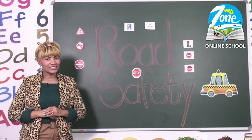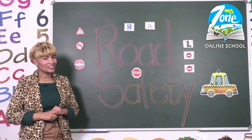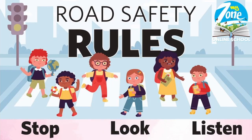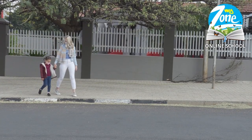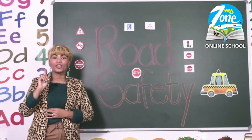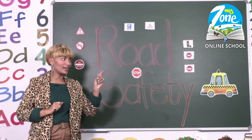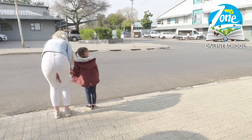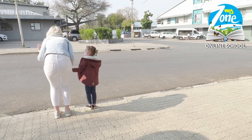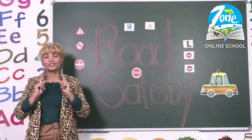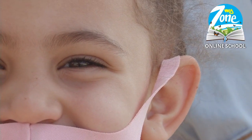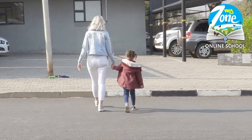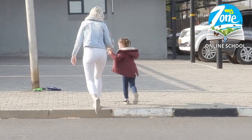Good day class. Today we are going to have a quick road safety lesson. Step 1: always stop when you get to the road. Step 2: you have to make sure to look left, right, and left again. And as soon as you don't hear or see any more cars, then you are free to cross the road.